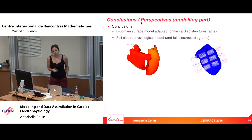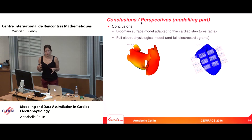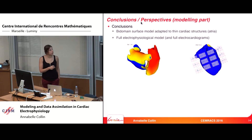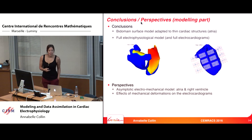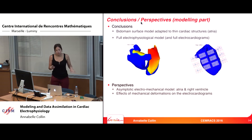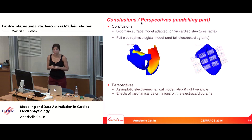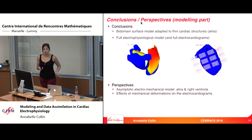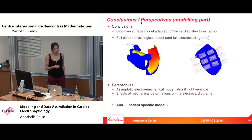To conclude the first part: we have a bidomain surface model adapted to thin cardiac structures such as the atria. With this, we can obtain a full electrophysiological model by coupling the atria with the ventricles, and also apply electrocardiograms for further validation. Perspectives include obtaining asymptotic electromechanical models — a difficult subject because fibers are also the preferred direction for contraction — and studying the effect of mechanical deformation on electrocardiograms.